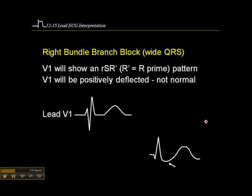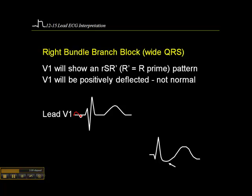V1 will be positively deflected, which is not normal. Normally we expect V1 to show a P wave, a little R wave, then a negatively deflected wave, and then a T wave which may be upright or inverted. But when you see V1 positively deflected — or sort of half positive, half negatively deflected — and the QRS is wide, you're likely dealing with a right bundle branch block. So you see a wide QRS and V1 is positive — you're most likely dealing with a right bundle branch block. We have a little R, then S, and then R'. That's the RSR' configuration.